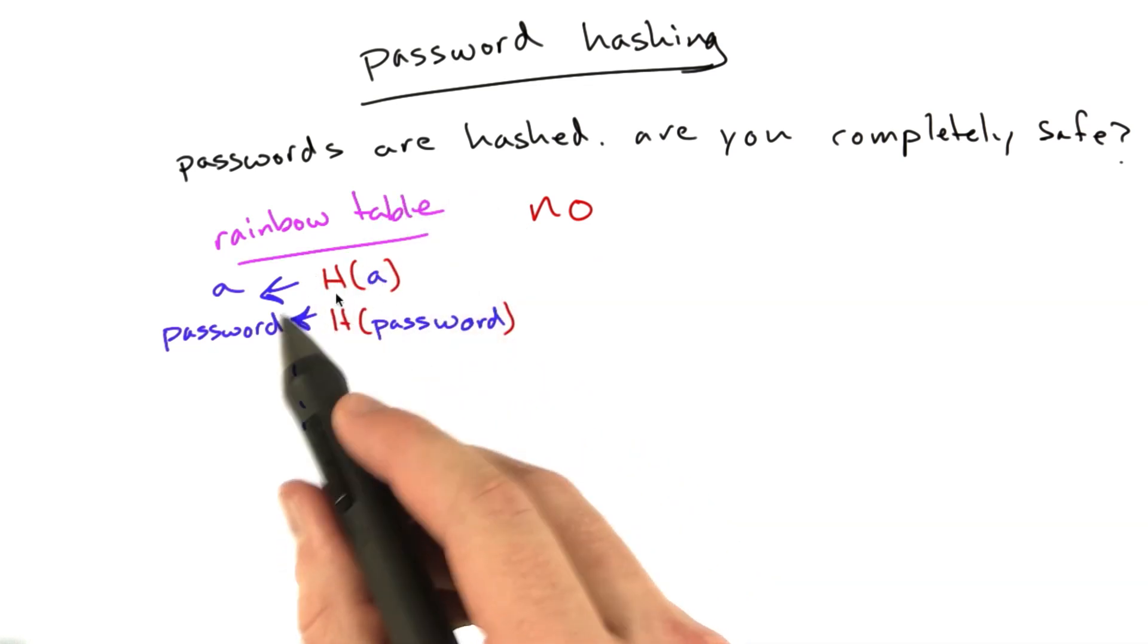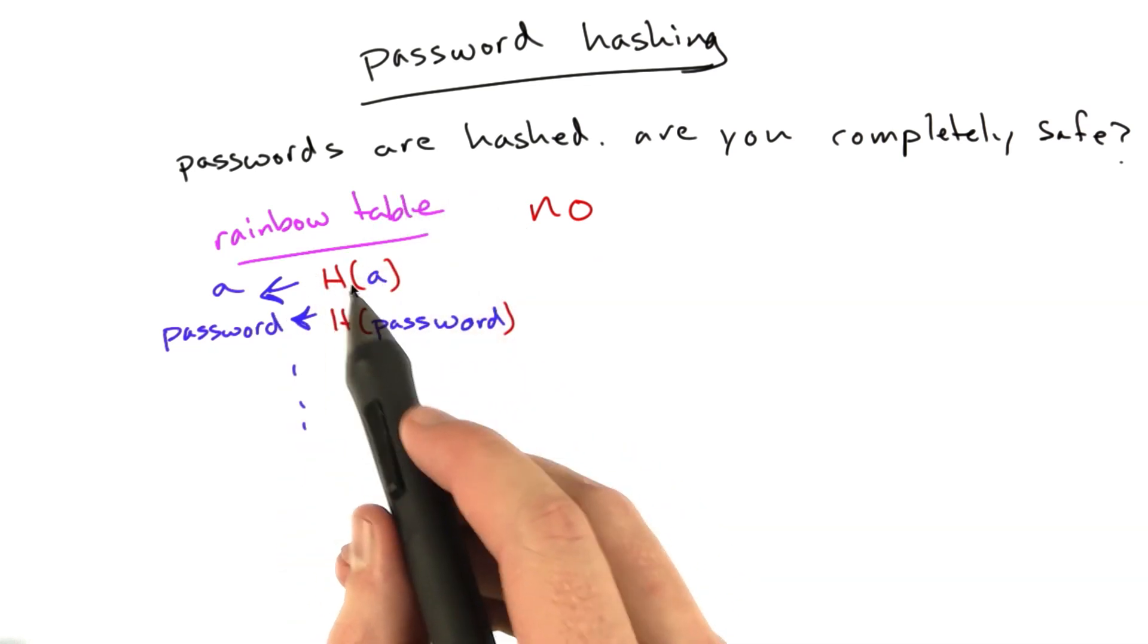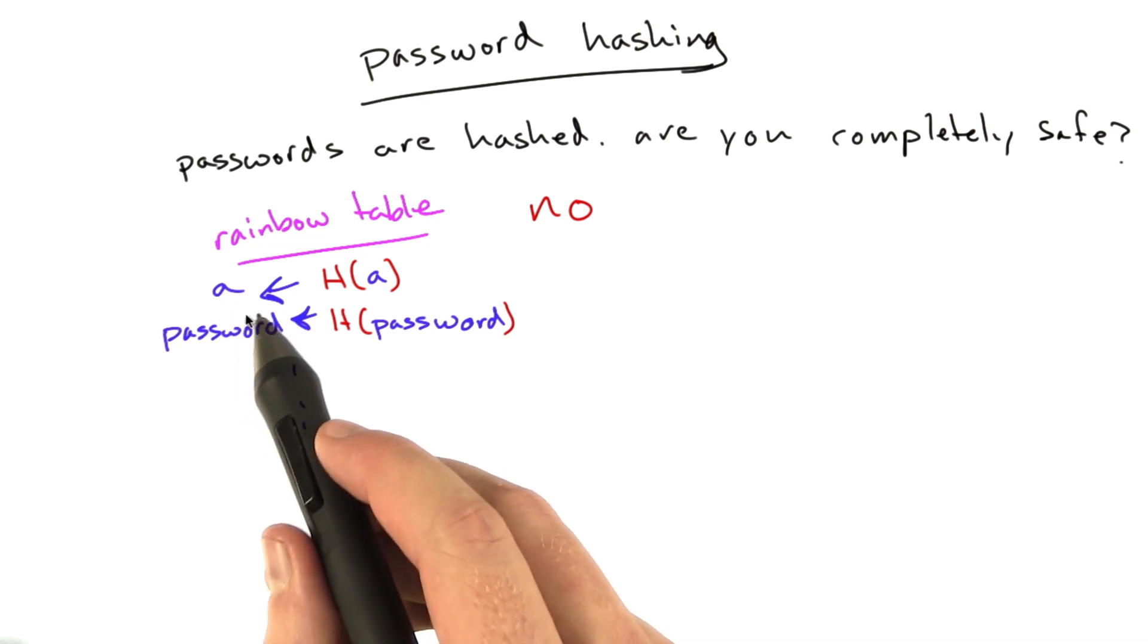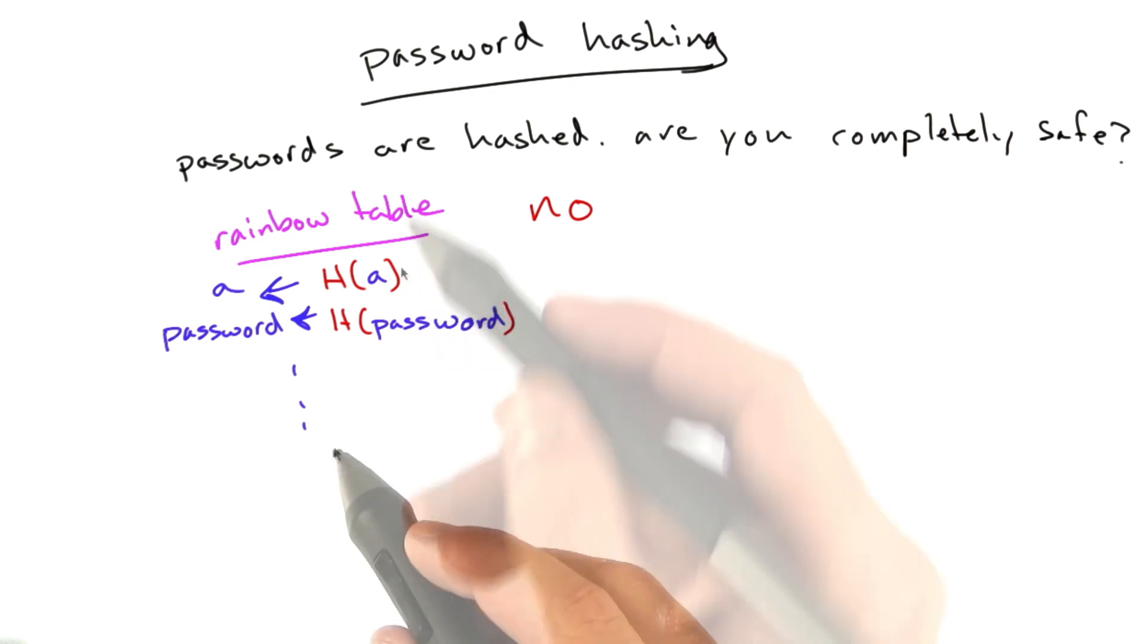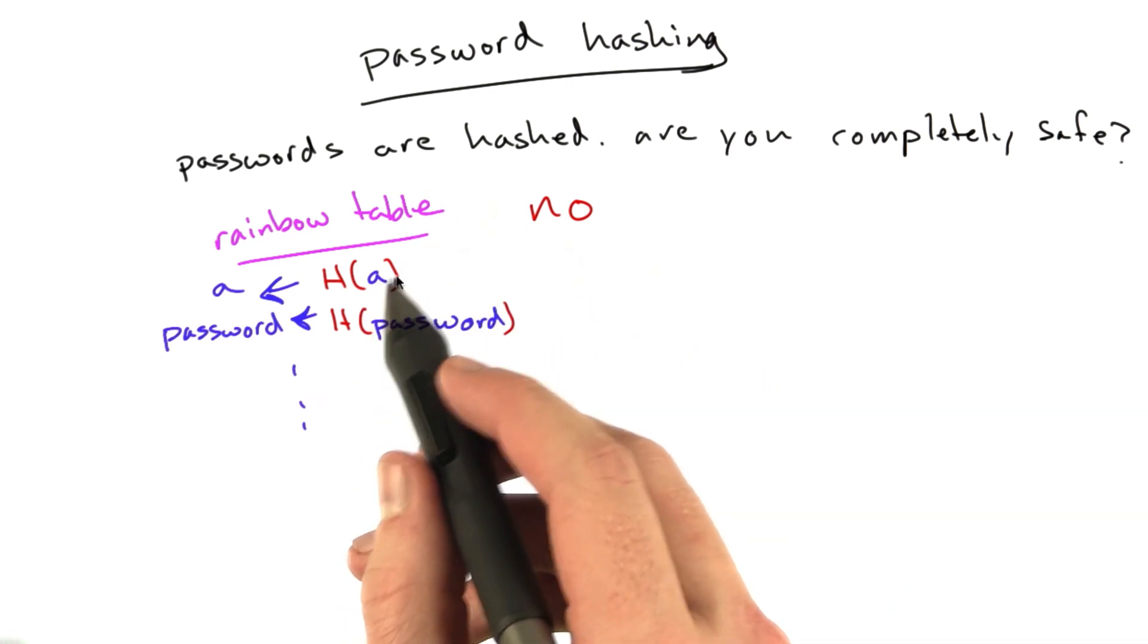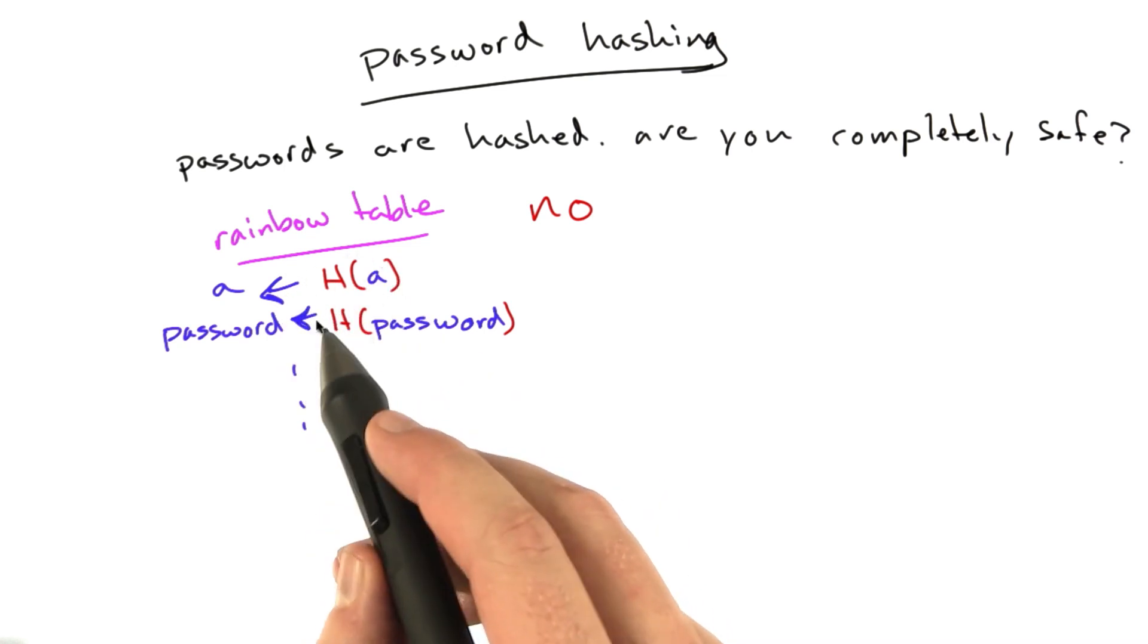There are these mappings, these databases of a hash version of a password to the clear text password, they exist. You can Google for a rainbow table for a hash algorithm of your choice, download that hash table or download that mapping, turn it into a hash table, and you're good to go. There's a very simple way to get around this.